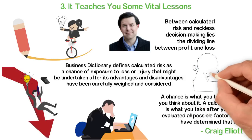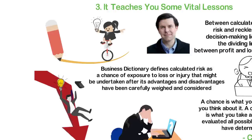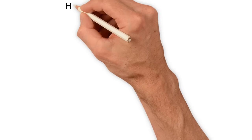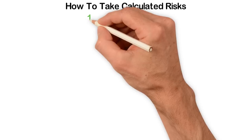Calculated risk makes the difference between an ordinary and an extraordinary life, which is why we consider Page's statement, if you're not doing some things that are crazy, then you're doing the wrong things, valid. How to take calculated risk?